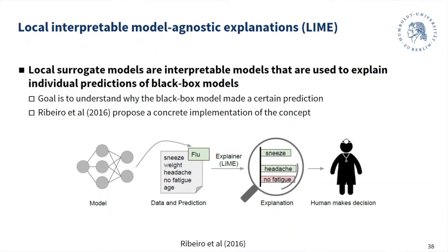To remind you — the different family of techniques to interpret models includes the family of local techniques, local explanation methods, where local means that we are interested in the reason why some model predicted an individual case, an individual data instance, in a specific way. That's what is meant by local. We start with LIME, an acronym for Local Interpretable Model-Agnostic Explanation. There you also have this element of locality in the very name of the technique. The setting is this: assume we are given some black box model — gradient boosting machine, neural network, random forest, whatever. We use this model to inform decision making, for example, classifying incoming credit applications into good risks and bad risks. The goal in local interpretation is to understand why the black box model made a certain prediction for an individual application.